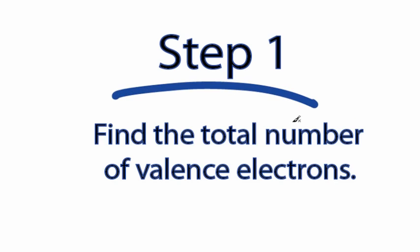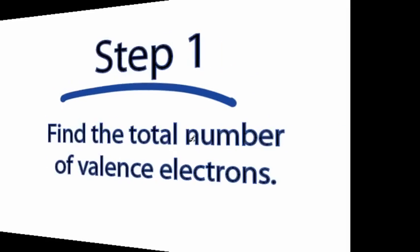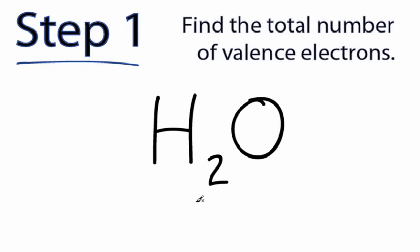Step 1. Find the total number of valence electrons for the molecule you're drawing the Lewis structure for. Let's try one. We'll use the periodic table to figure out how many valence electrons each element has. Hydrogen is in group 1 on the periodic table, so it has one valence electron. But the subscript tells us that we have two hydrogens, so we'll need to multiply that by 2.